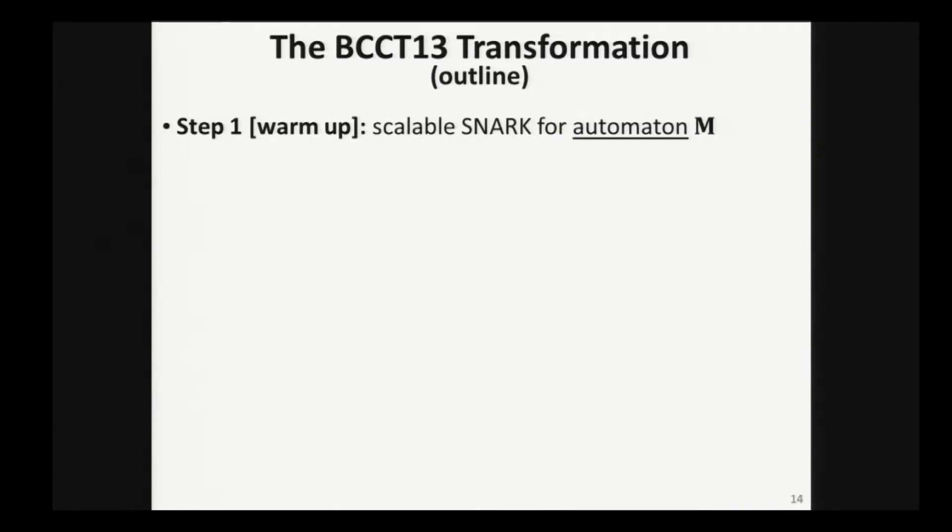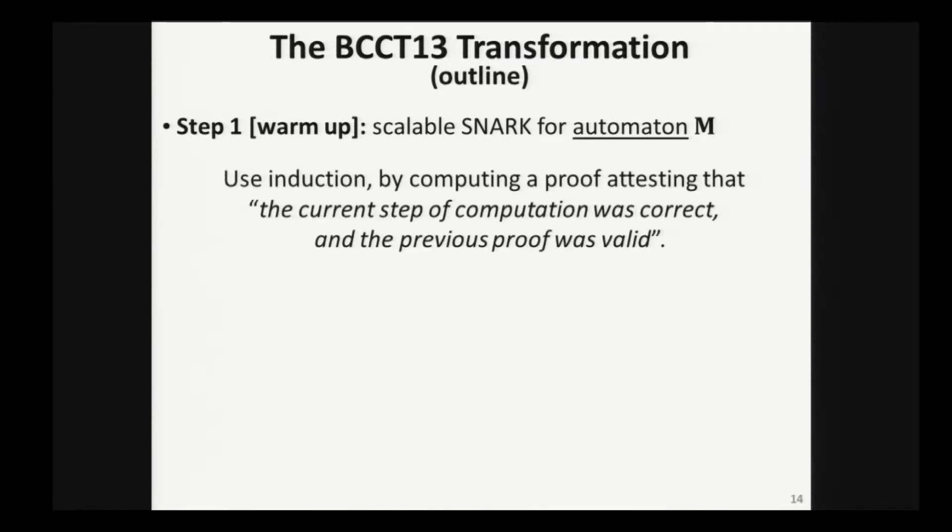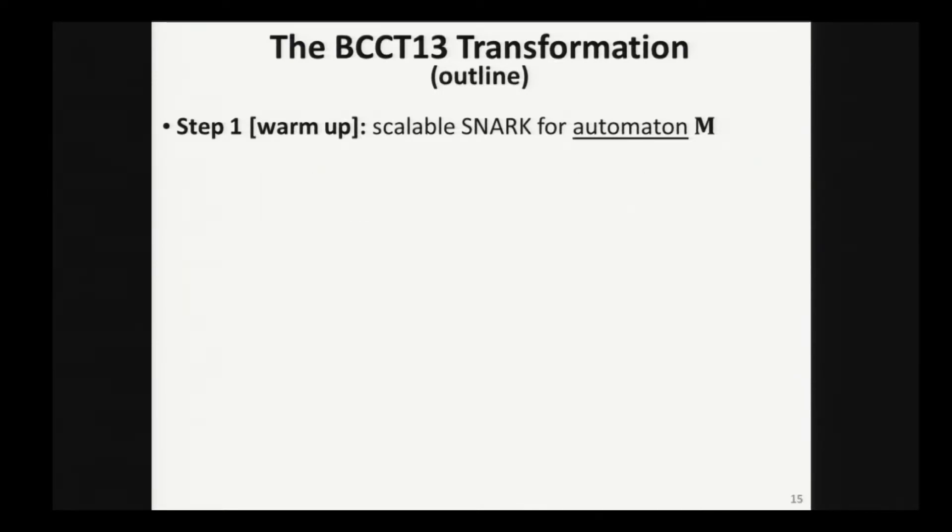I really like to understand this transformation by first focusing on a simpler case. Suppose all I really want to do is I want to construct a scalable SNARK not for a machine but for an automaton, so there's no memory sitting around. At the highest level, the idea is to use kind of induction. You're going to compute a proof for each step that's going to test that the current step of computation was correct and moreover, the prior proof that was computed before was valid. So you keep maintaining a proof of correctness of the computations so far. Pictorially, it would look something like this.